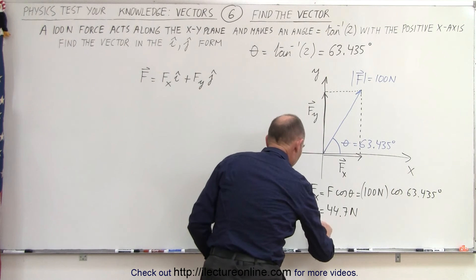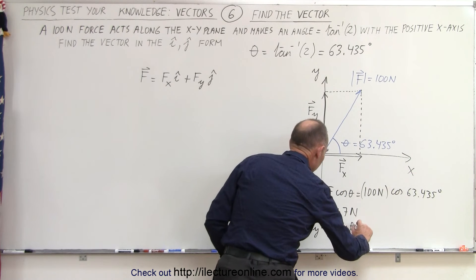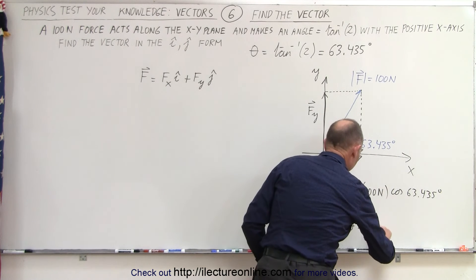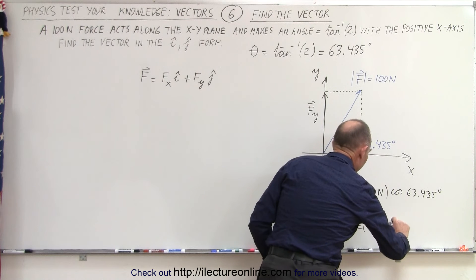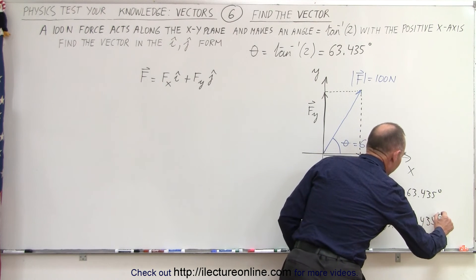We do the same for F sub Y. F sub Y is equal to F times the sine of theta, which is equal to 100 Newtons, times the sine of 63.435 degrees.